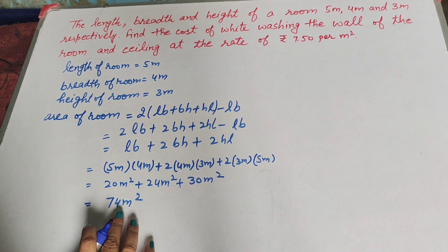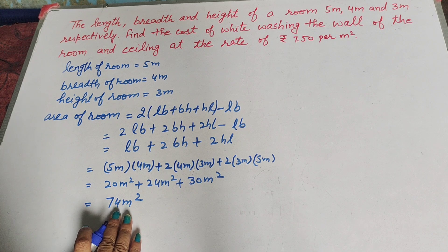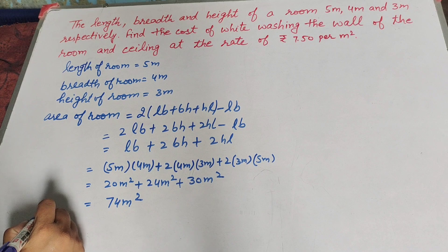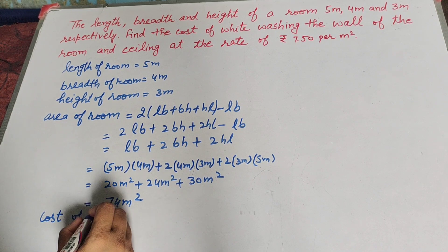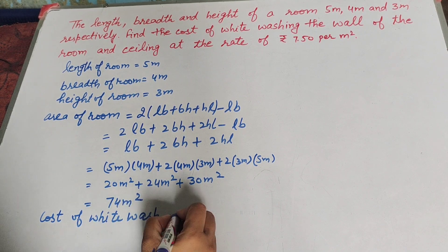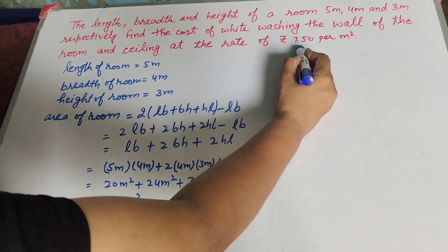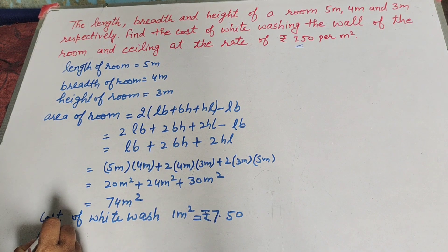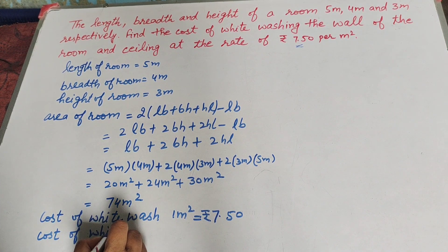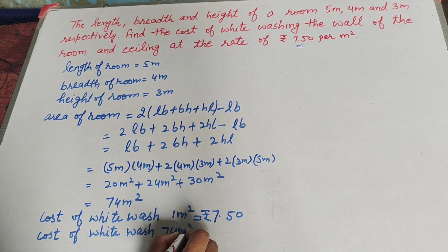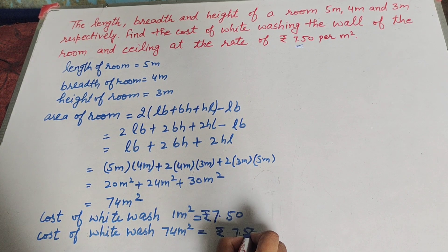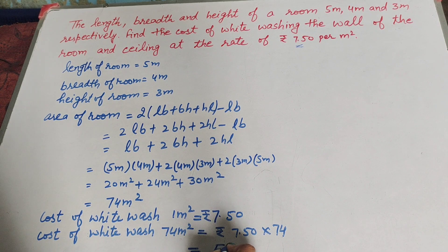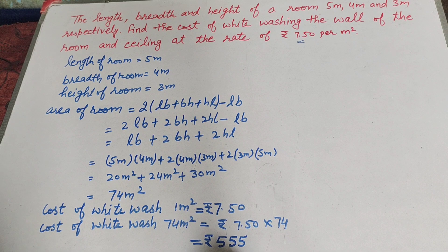Now we find the cost of whitewashing the 74 meter square area. Cost of whitewashing 1 meter square area is equal to rupees 7.50. So cost of whitewashing 74 meter square area is equal to rupees 7.50 multiplied by 74, which gives us rupees 555. Therefore, rupees 555 is the cost of whitewashing the 4 walls and 1 ceiling.